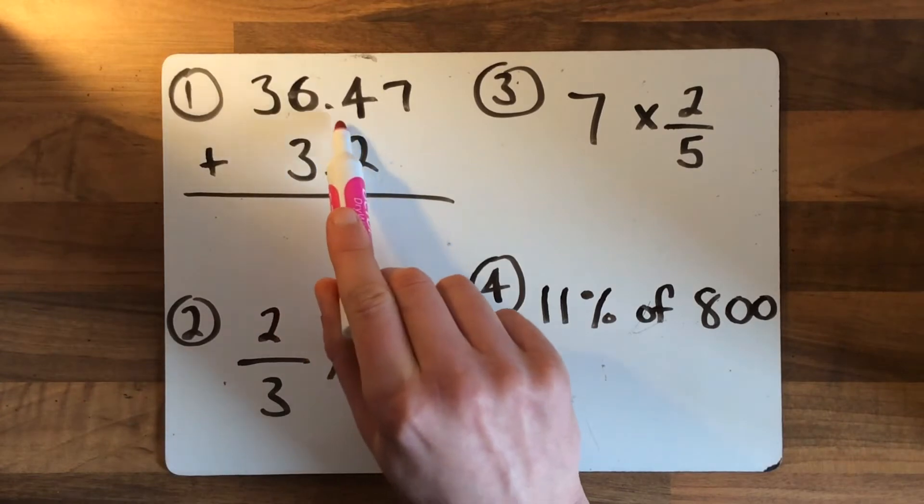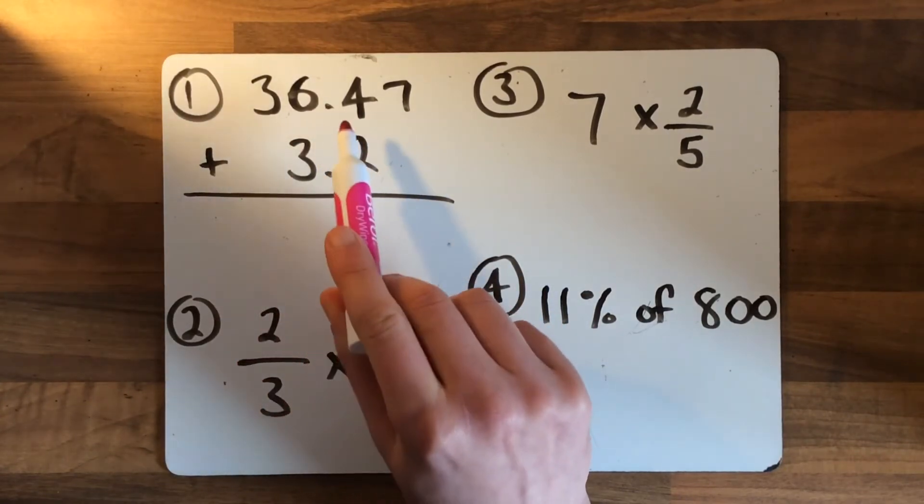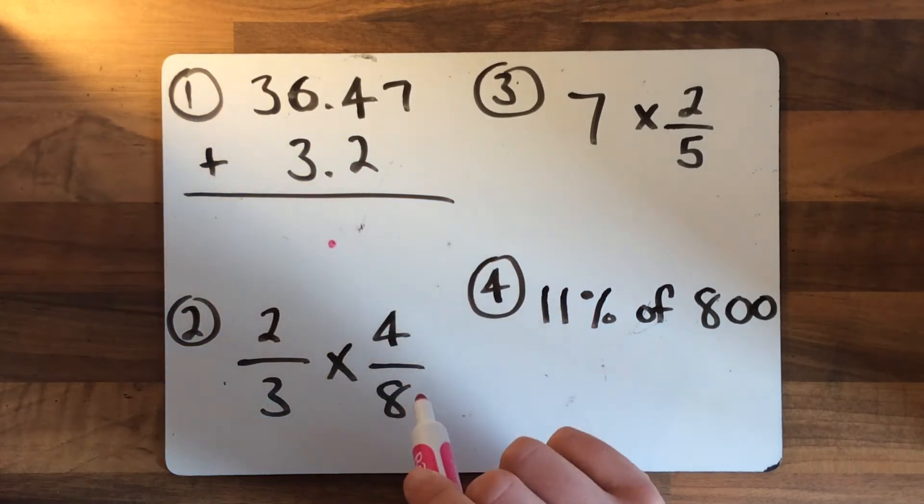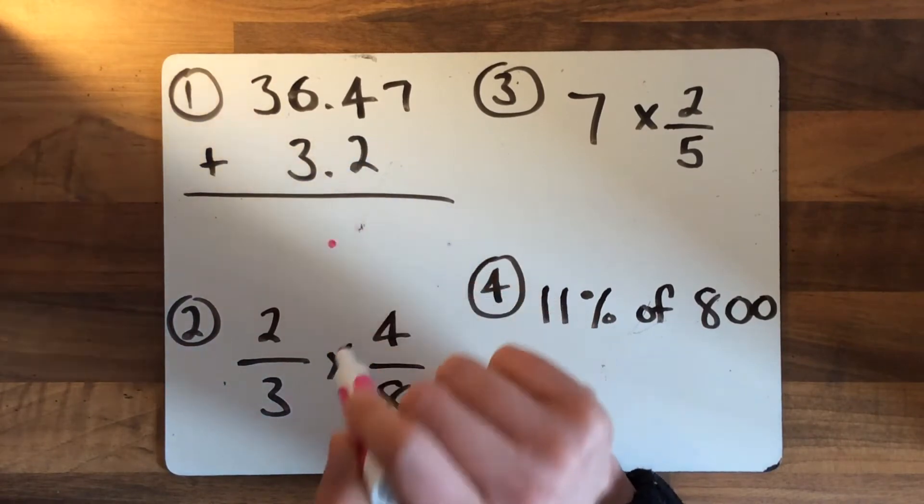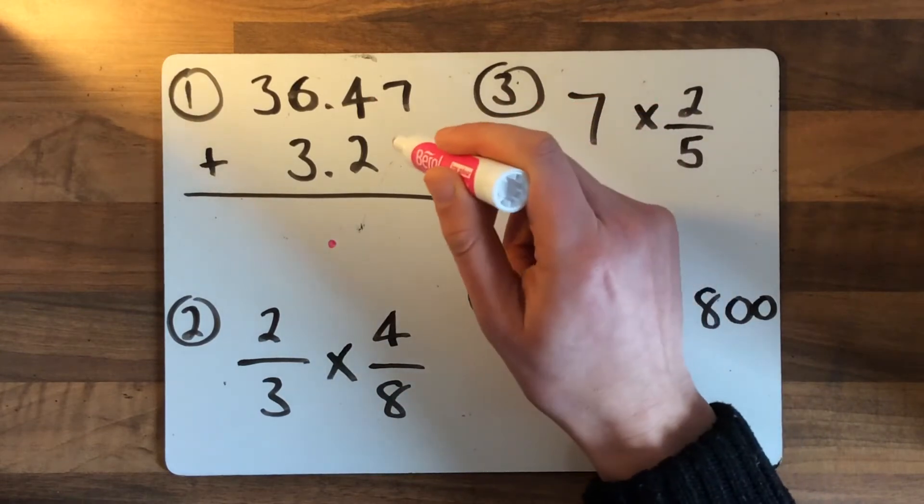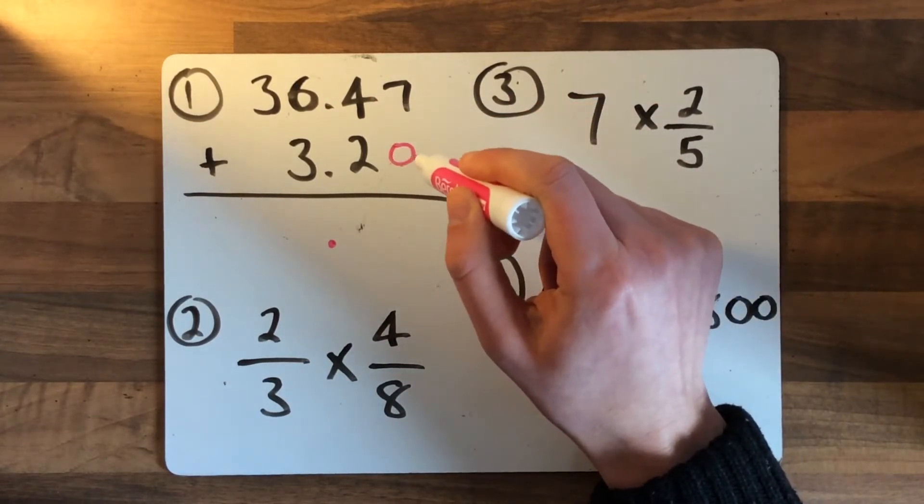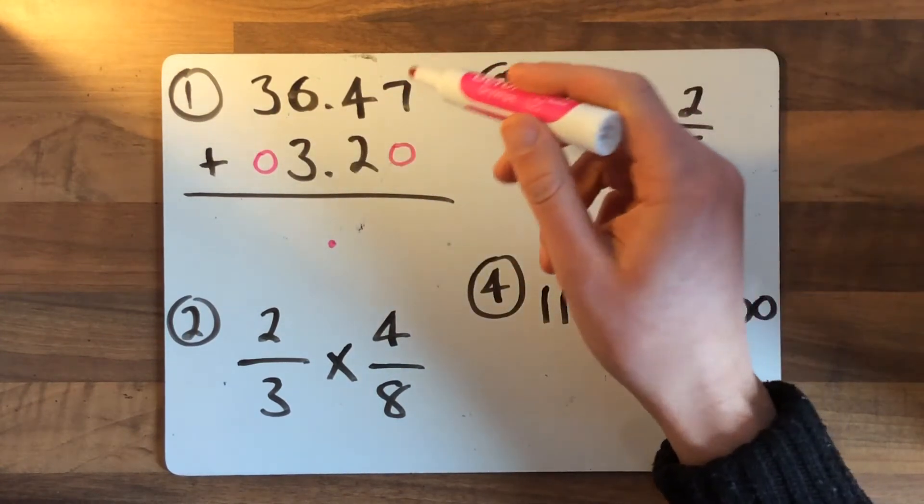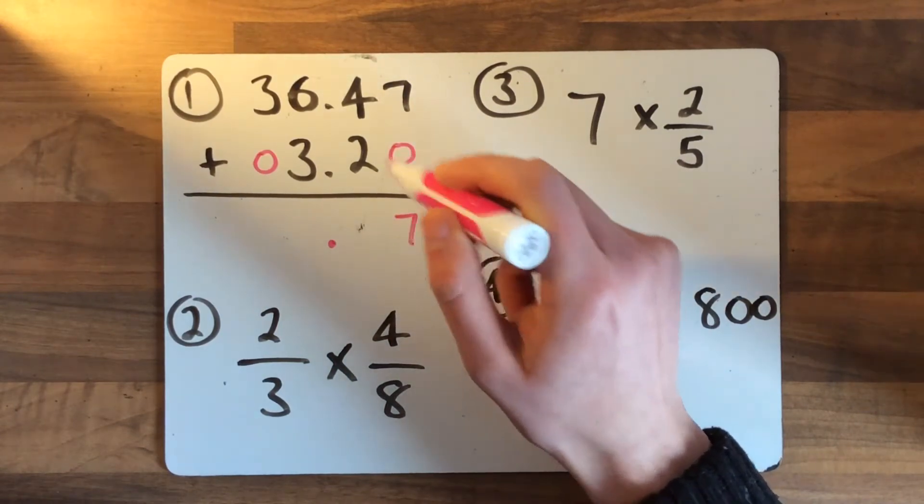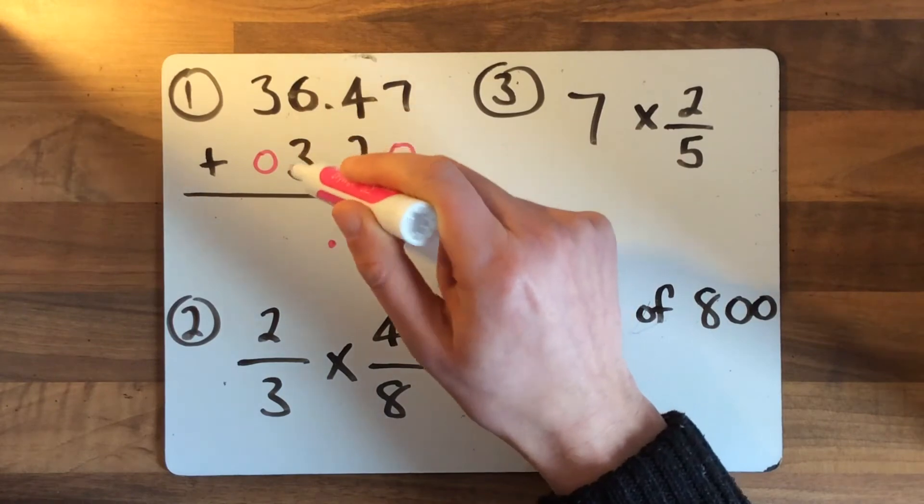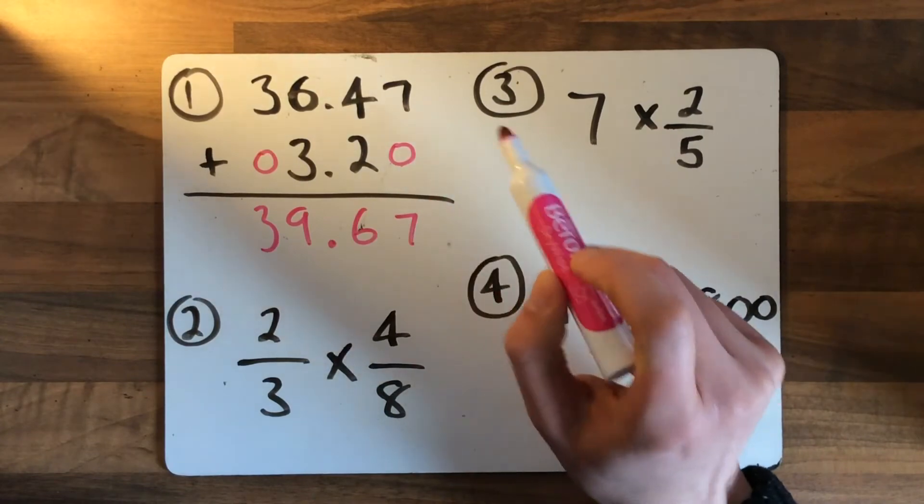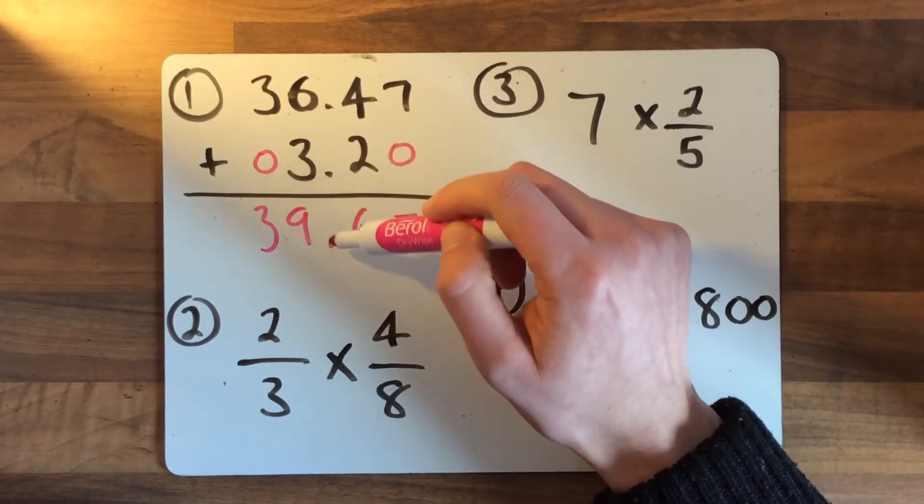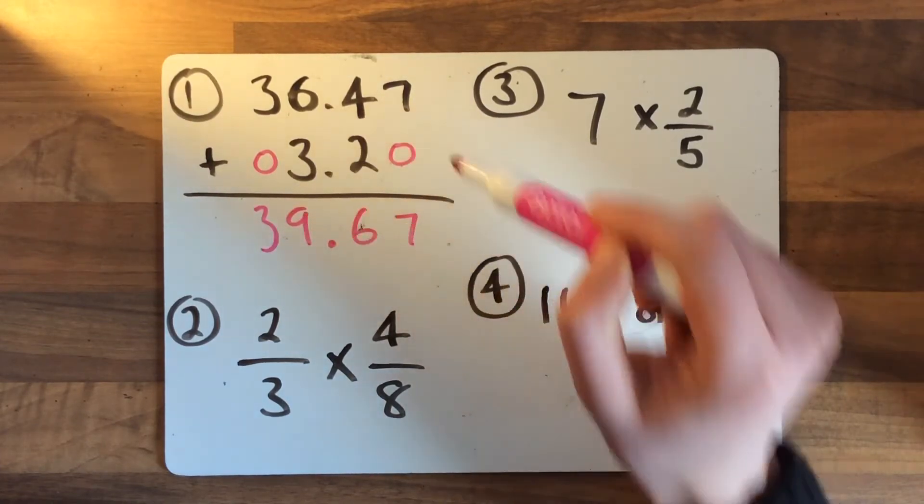Let's look at number one: 36.47 add 3.2. You can see I've lined them up. Remember that golden rule of decimals - making sure the decimal points are one on top of another. Our answer must also have the decimal point lined up, stacked up like a tower. It's an addition, so we always start over at the right side. We can put a zero there because there are no hundredths, and we could put zeros to plug those gaps. We don't have to, but it can make the addition clearer. 7 add 0 is 7, 4 add 2 is 6, 6 add 3 is 9, 3 add nothing is 3. Very straightforward because there's no exchanging. You can see I put the decimal point in at the start so they're stacked up one on top of another. 39.67 is your answer.